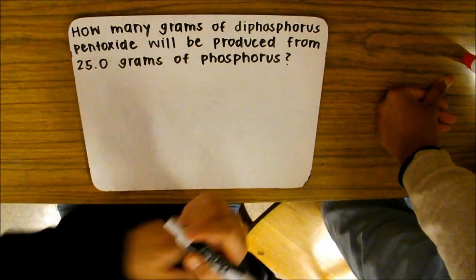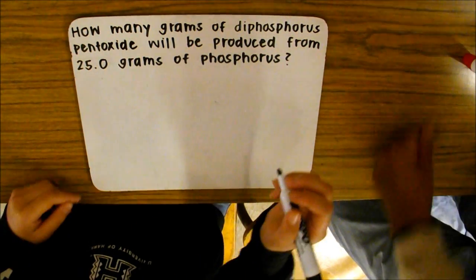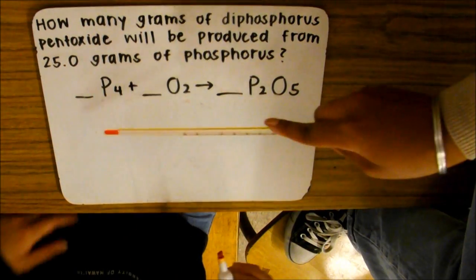How many grams of diphosphorus pentoxide will be produced from 25 grams of phosphorus? First, we're going to balance the equation.